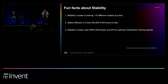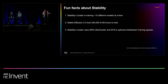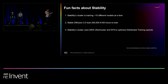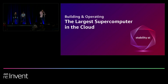Thanks for joining us, Imad. Stability just launched Stable Diffusion 2 — was it Thursday of last week? Stable Diffusion 2.0 took 200,000 A100 hours to train. I imagine your future models are going to take more and more — you spent about 1.2 million hours doing the OpenClip model. When building very large clusters, you want to take advantage of UltraCluster and EFA to optimize distributed training. UltraCluster basically allows you to make your giant cluster look like one supercomputer. So without further ado, I'll hand the mic to Imad.